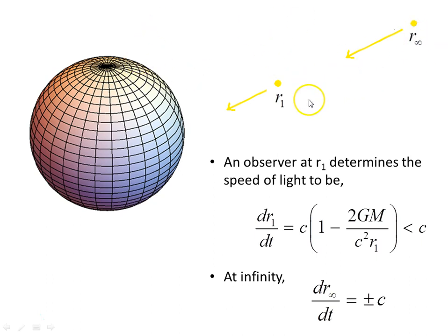And just to quantify that a little bit further, we look at the observer at r1, determines the speed of light to be dr1 dt, as c times this object here. And we find that to be, at r1, to be less than c. At infinity, as r goes to infinity, as r1 goes to infinity, we find that dr dt is again plus and minus c. As spacetime becomes asymptotically flat, moving further out.